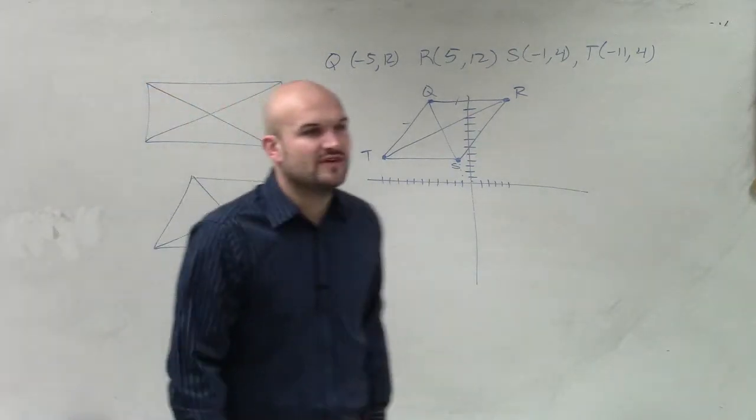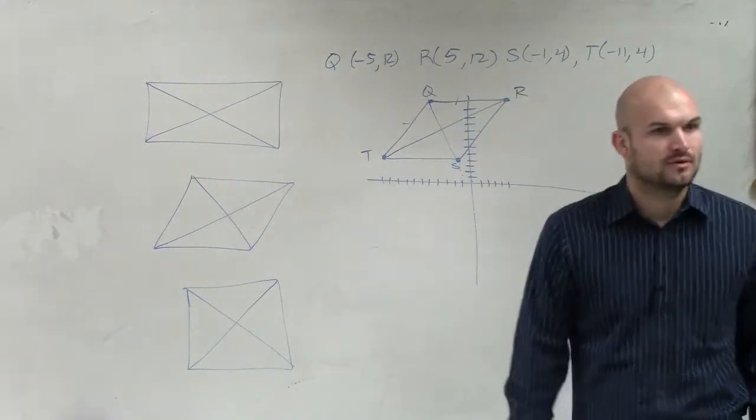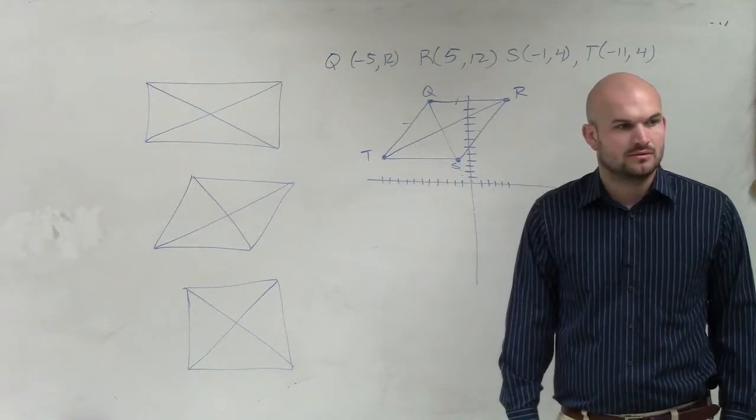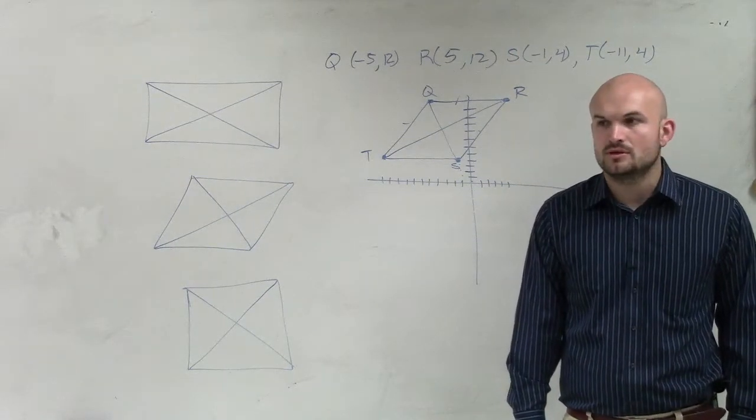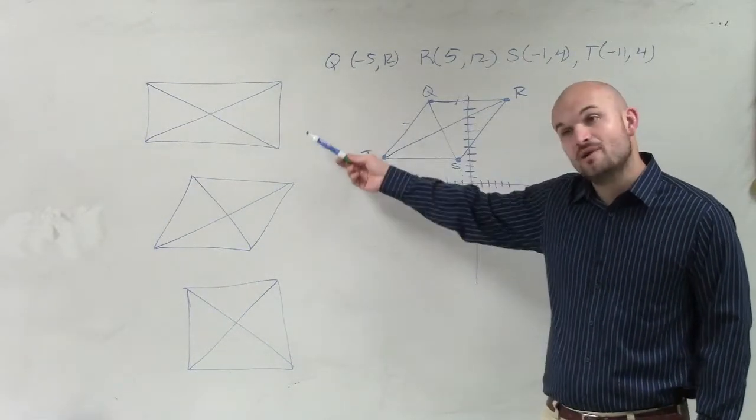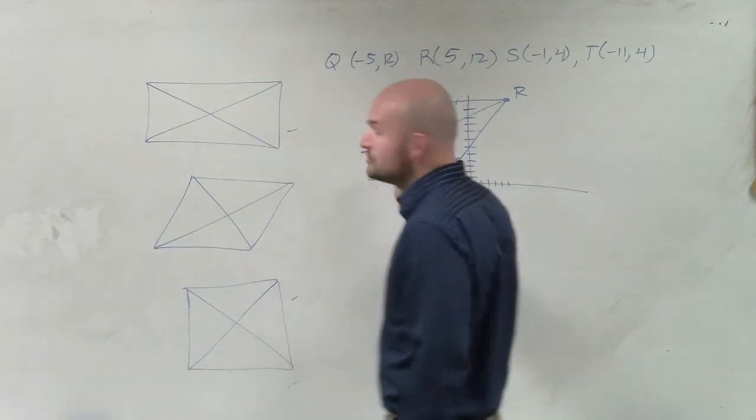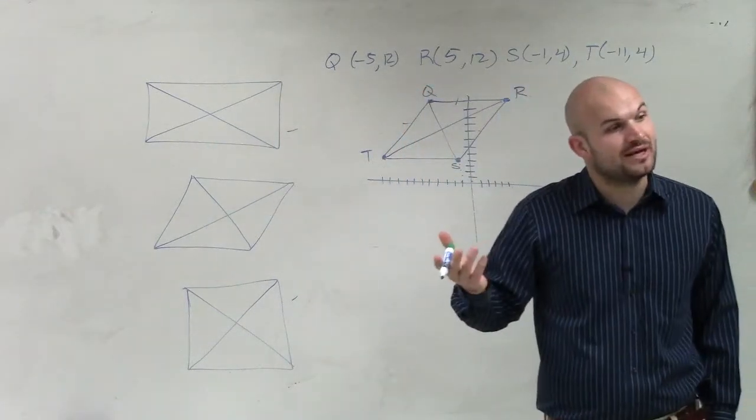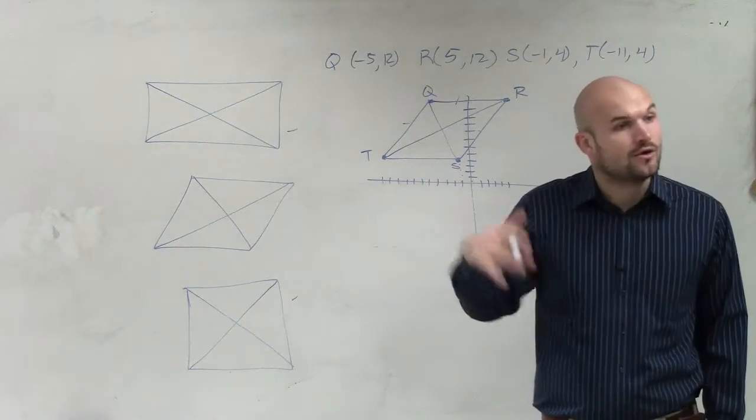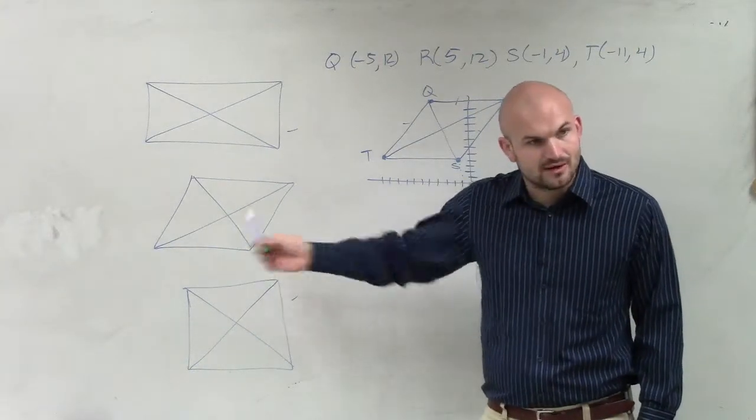But there's something different about each one of these diagonals. If I draw the diagonals for each of these figures, they all bisect each other. We know that. But what are the only two figures where the diagonals are equal in measure? What is the only two figures where the diagonals are equal in measure? The what? Rectangle. Rectangle and a square. So if I go ahead and do the distance formula of the two diagonals and they're equal in measurement, then what do I have? Either a rectangle or a square. And if they're not equal in measurement, then what do I have? A rhombus, right?